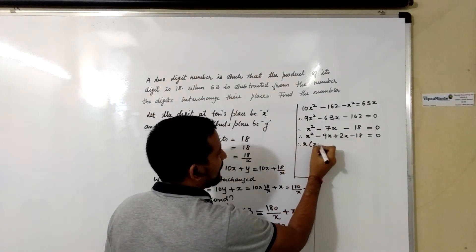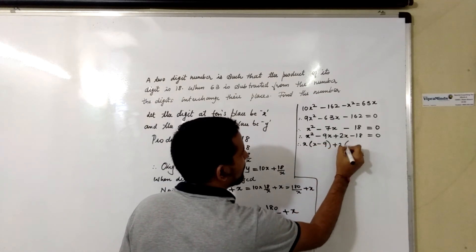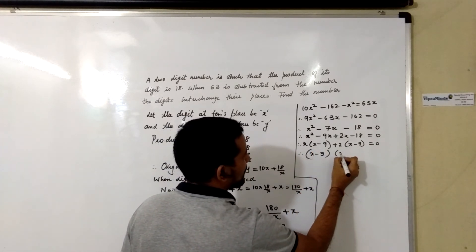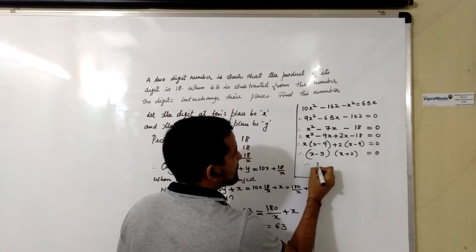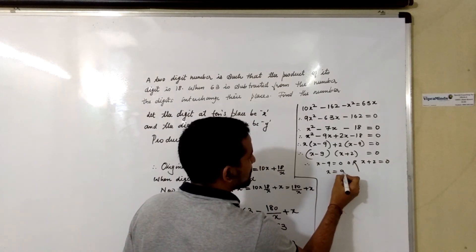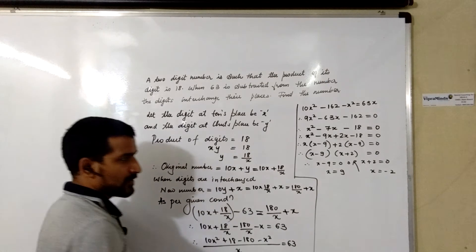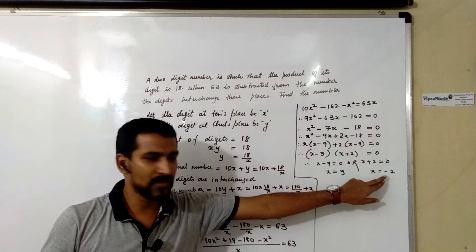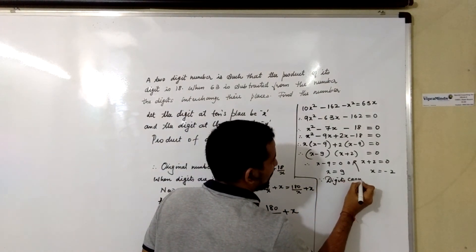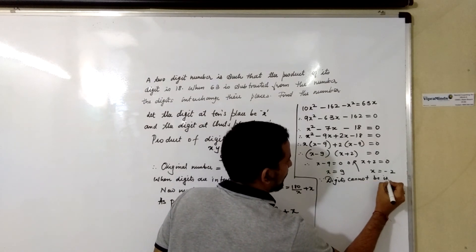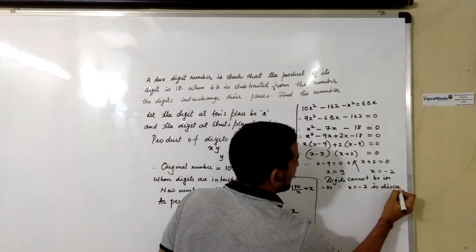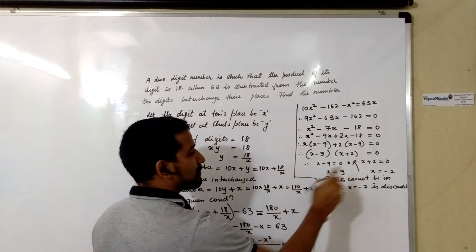X is common and X − 9 is common. So we get (X − 9)(X + 2) = 0, giving X − 9 = 0 or X + 2 = 0. Therefore X = 9 or X = −2. Since a digit cannot be negative, we discard X = −2. Therefore X = 9.